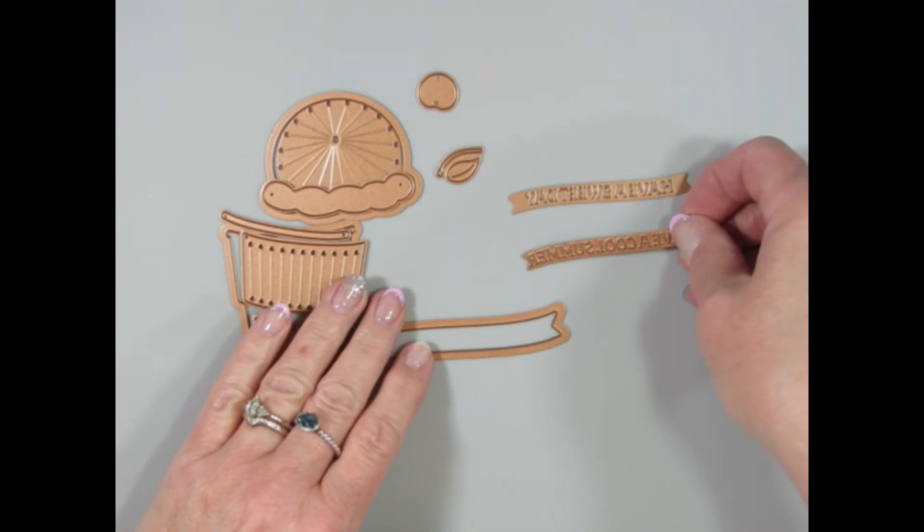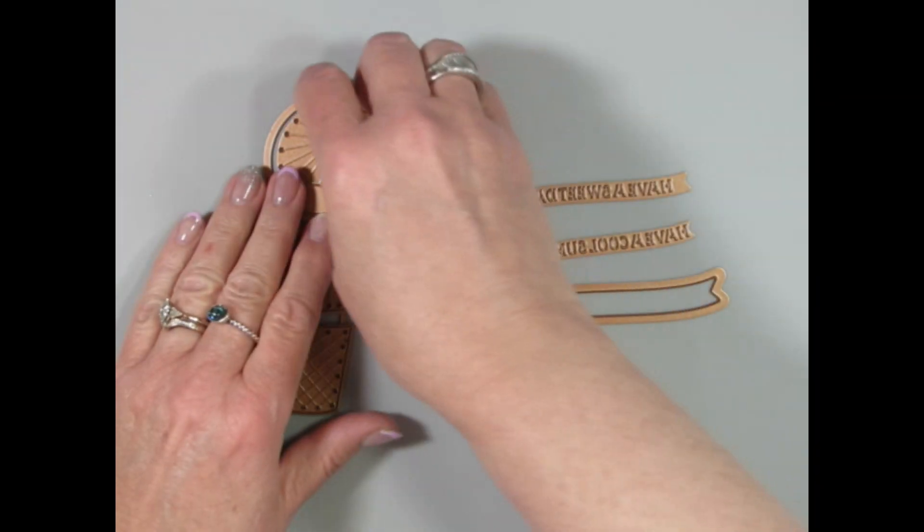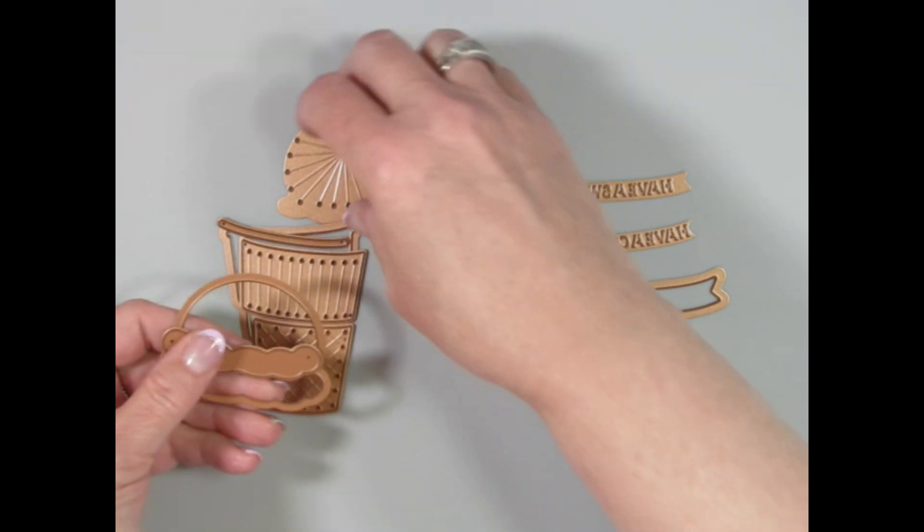This one is called Stitched Ice Cream. I'm going to show you these sentiments. There are two sentiments and one banner die.